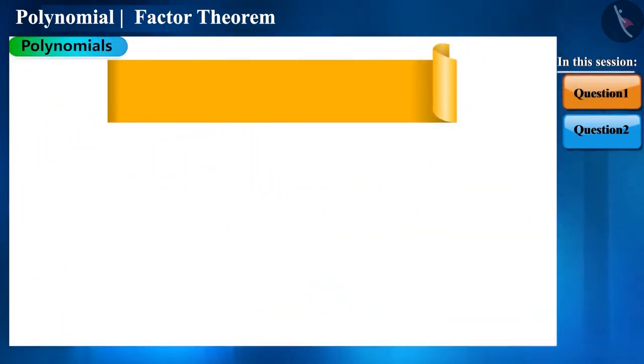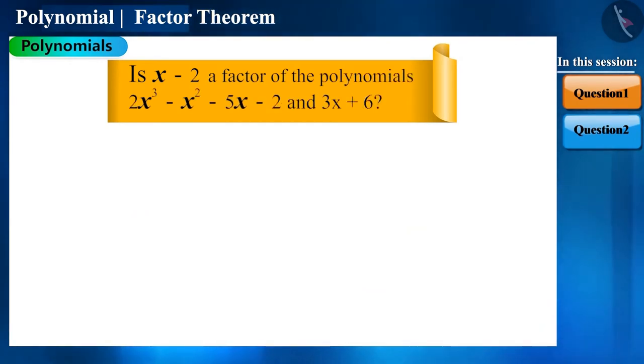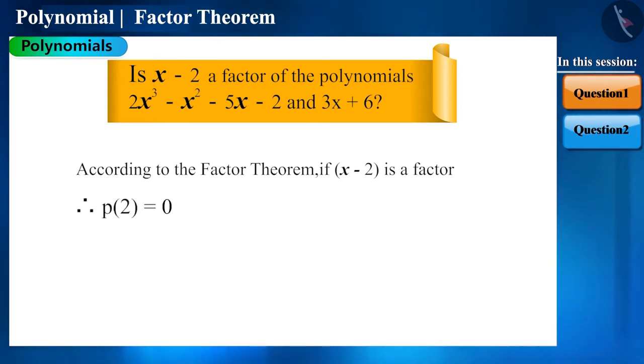So let's start with the first question. Check whether x-2 is a factor of the given polynomials. According to the factor theorem, if x-2 is a factor of these two polynomials, then p of 2 should be 0, where 2 is obtained by equating x-2 to 0.